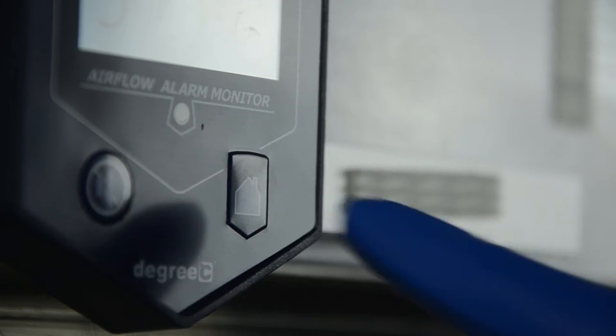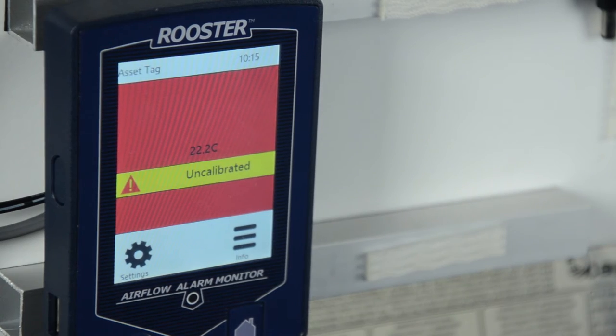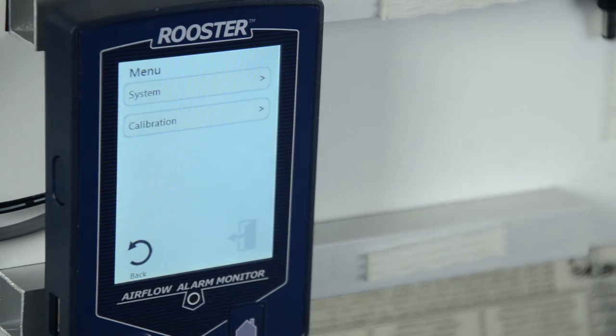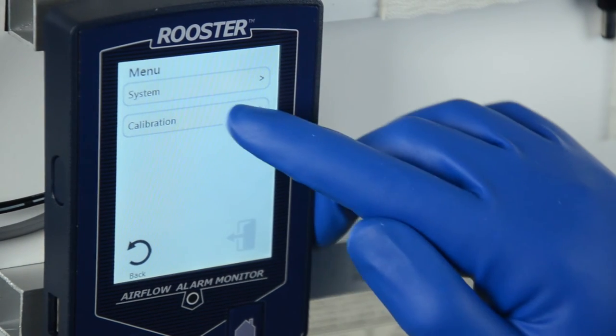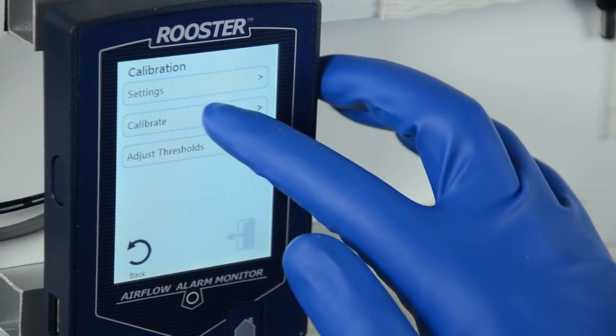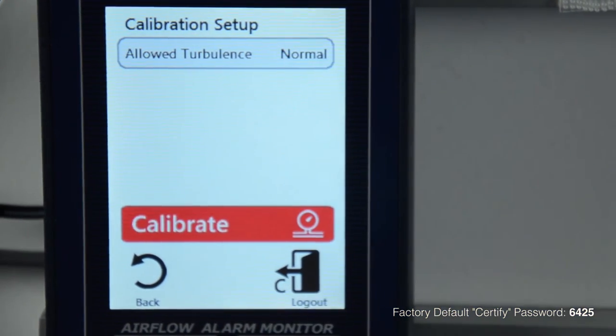When you have finished entering your date and time, press the hard home button on the module to return to the home screen. To initiate your calibration, you'll first have to enter the settings menu, then select calibration, then select calibrate. To access the calibration menu, you will be prompted to enter your certified password again.